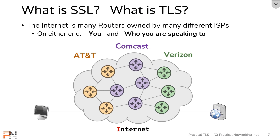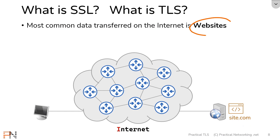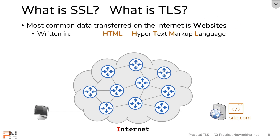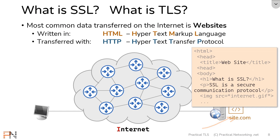Now most commonly on the internet the type of data that is transferred is to websites, meaning this server could be the web server in charge of hosting site.com. A website is something written in HTML, which stands for Hypertext Markup Language, and transferred in HTTP, which stands for Hypertext Transfer Protocol. This right here is an example of HTML — an HTML page is simply text with different tags and different content that is meant to be displayed by a web browser.